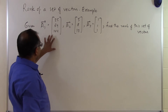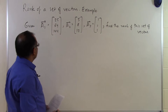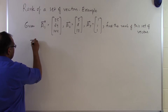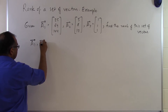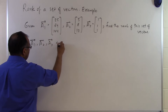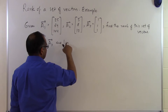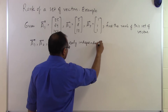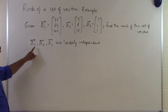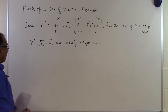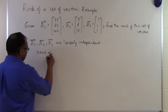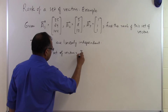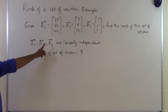So you're given these three vectors, and somebody's asking for the rank of this set of vectors. In the previous example, we found out that a1, a2, a3 are linearly independent. So since a1, a2, a3 are linearly independent, the rank of this set of vectors will be equal to 3, because we found that three vectors are linearly independent.